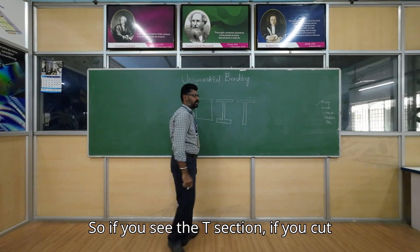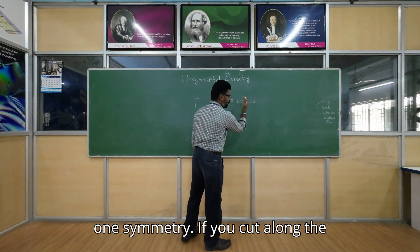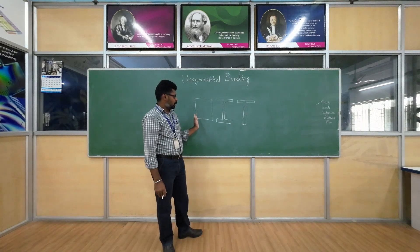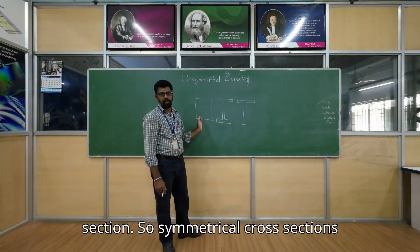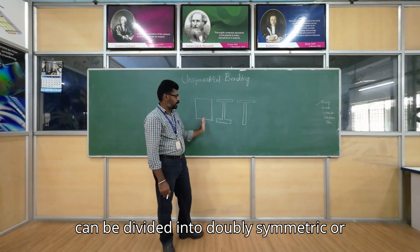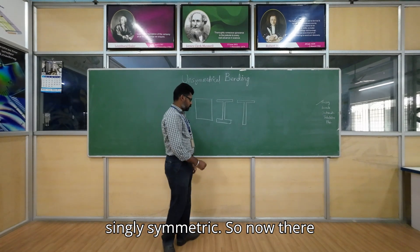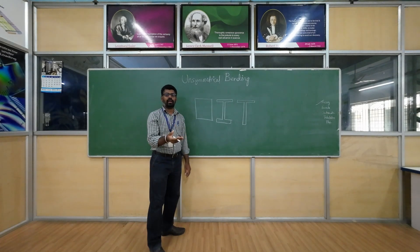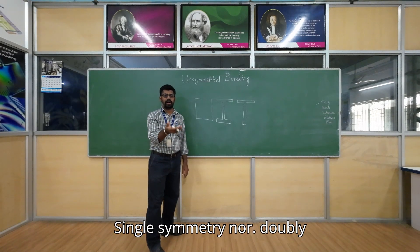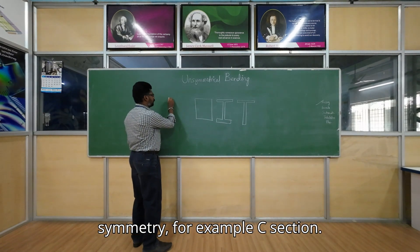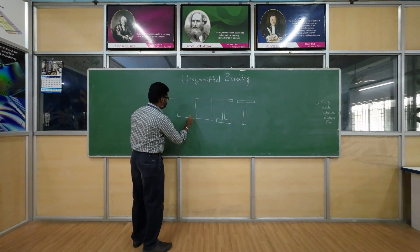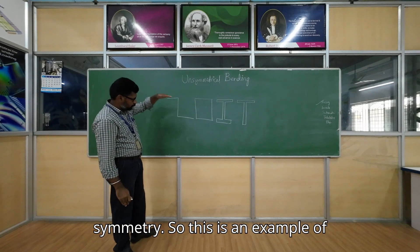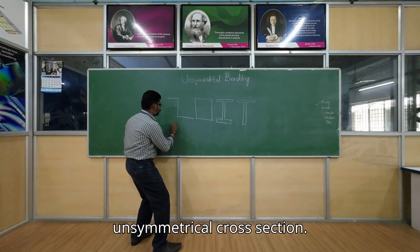For a T-section, if you cut along the vertical axis you get symmetry, but if you cut along the horizontal axis you do not get symmetry. So symmetrical cross sections can be divided into doubly symmetric or singly symmetric. A C-section has neither single nor double symmetry — it is an example of an unsymmetrical cross section.